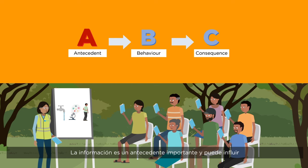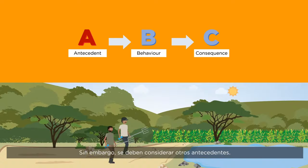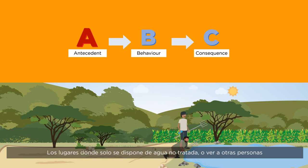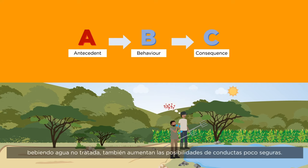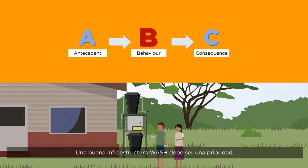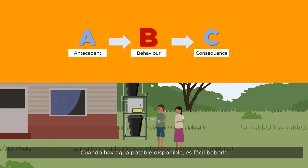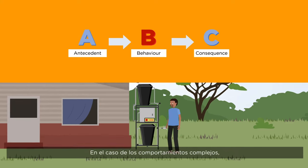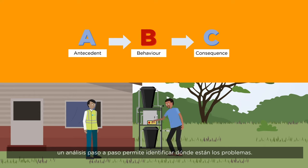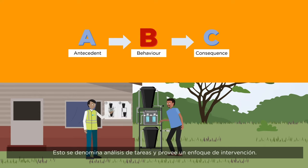Information is an important antecedent and may yield some success in influencing changes in behaviour. However, other antecedents need consideration. Places where only untreated water is readily available, or seeing other people drinking untreated water, also increases the chances of unsafe behaviour. Robust wash systems should be a priority because they are key antecedents for appropriate behaviour. When safe water is available, drinking it is easy. With complex behaviours, a step-by-step breakdown helps identify where problems are — this is called task analysis and provides an intervention focus.